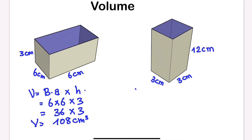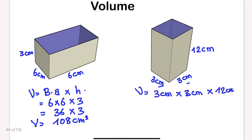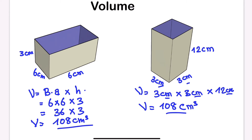For the second cuboid, using the same formula, the base area is 3 cm × 3 cm = 9, and the height is 12 cm. So 9 × 12 = 108 cm³. Both cuboids have the same volume, which is 108 cm³.